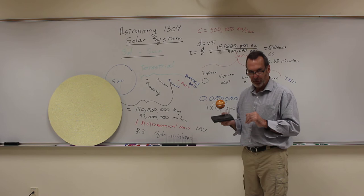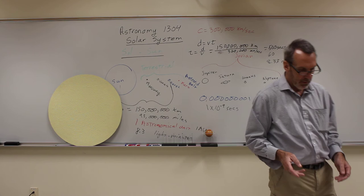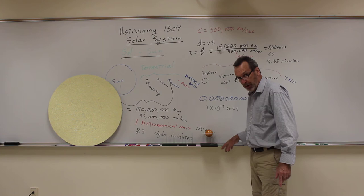Jupiter has a very thin ring. It also has four large moons. It actually has 50 or 60 moons, but there's only four really what we call large significant moons: Io, Europa, Ganymede, and Callisto. We'll talk about those in detail later. But in our scaled solar system, Jupiter would be a quarter of a mile away, or about 1,200 feet away.